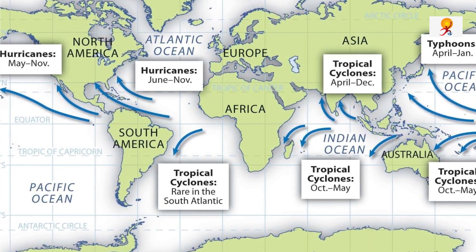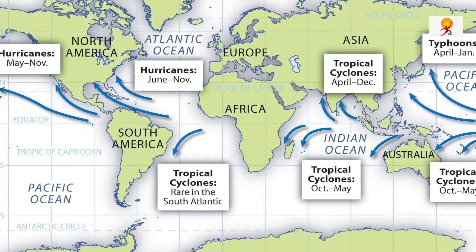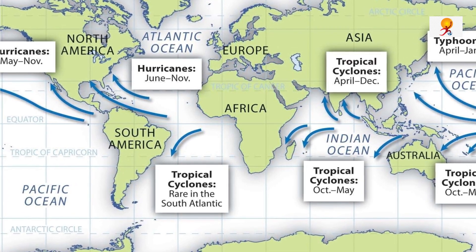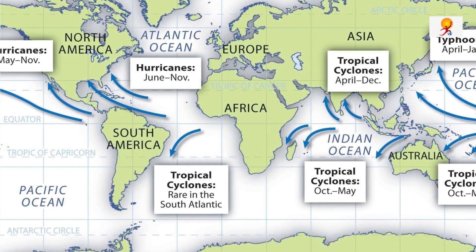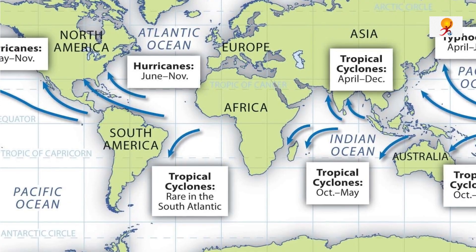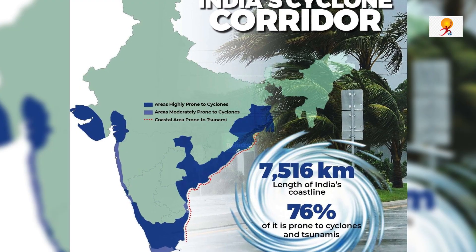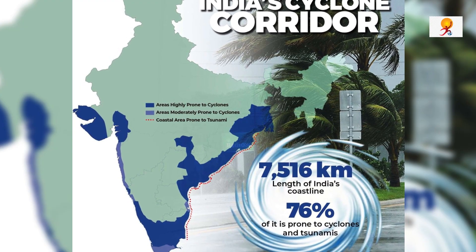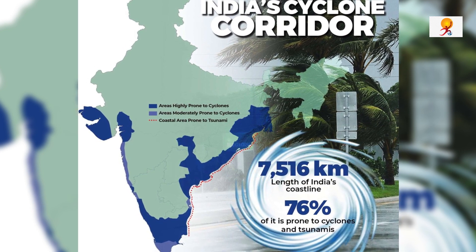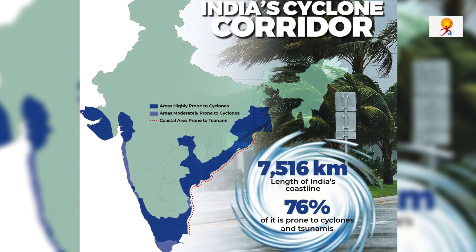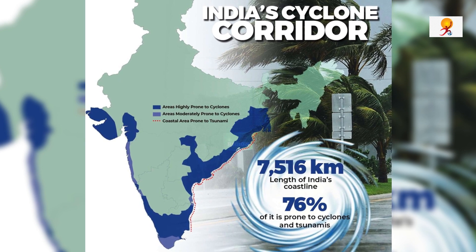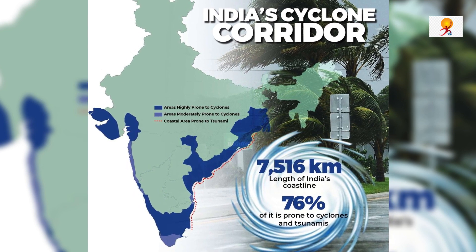In the Indian Ocean, they are called tropical cyclones. In India, tropical cyclones originate over the Bay of Bengal, Arabian Sea, and the Indian Ocean. These tropical cyclones have very high wind velocity and heavy rainfall, and hit the Indian coastal states of Tamil Nadu, Andhra Pradesh, West Bengal, Odisha, and Gujarat.